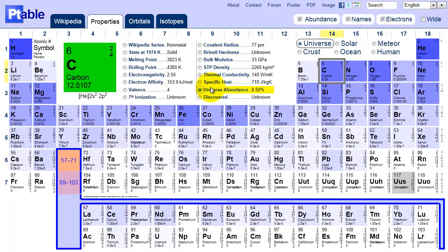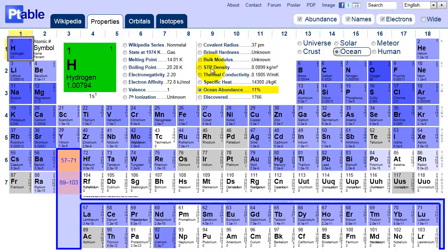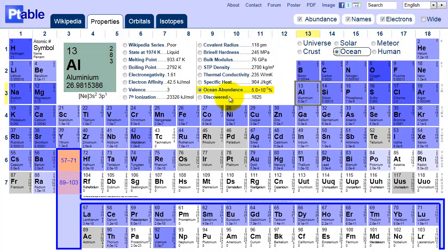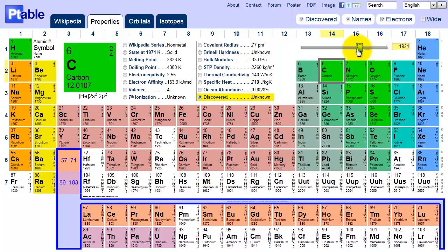Abundance is interesting. Here we can see the universe is 75% hydrogen by mass, and the oceans are 11% hydrogen and 86% oxygen. The discovered slider shows the years elements were isolated. Sliding back from this year dims the elements that were not yet discovered at the time.